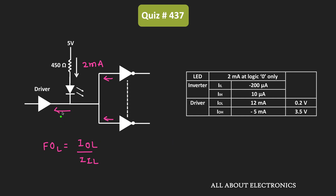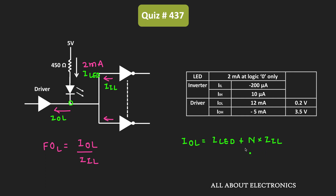So to understand that, let us apply the KCL at this node. Let's say the current which is going into the driver is equal to IOL, while the current for each inverter is equal to IIL. And let's assume that the current of this LED is equal to ILED. That means if we apply the KCL at this node, then we can write that this IOL current is equal to ILED plus N times IIL. We are assuming that N such inverters are connected at the output, and here the value of N is the fanout of the driver. That means now the value of N is equal to IOL minus ILED divided by IIL.